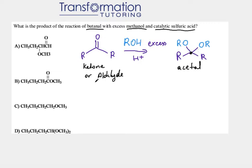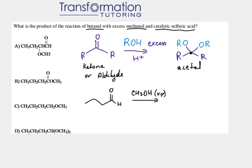Let's draw it out. Butanal has four carbons, and because it ends in -al it's an aldehyde, so I'm going to put a double bond O at the end with an H. This is our butanal. Then we have methanol, CH₃OH, in excess, and catalytic sulfuric acid, H₂SO₄.